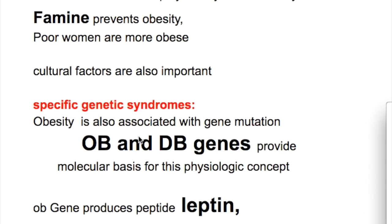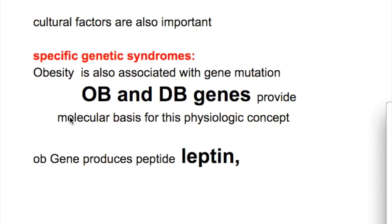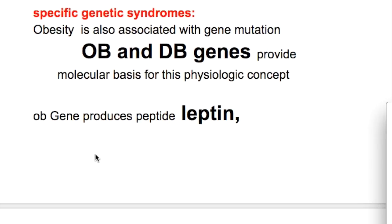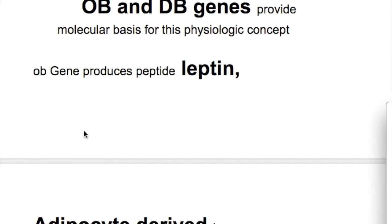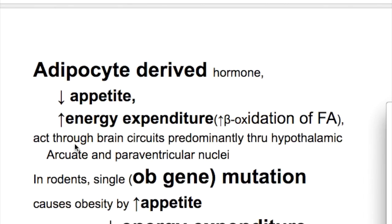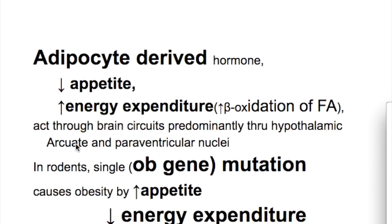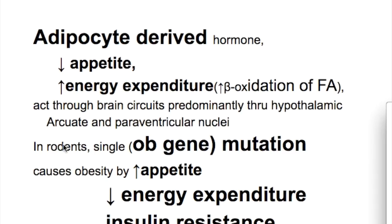Obesity is also associated with gene mutations. The OB (obesity) gene and DB genes provide the molecular basis for the physiologic concept of obesity. The OB gene produces the peptide leptin, which acts through brain circuits, predominantly through the hypothalamic arcuate and paraventricular nuclei.